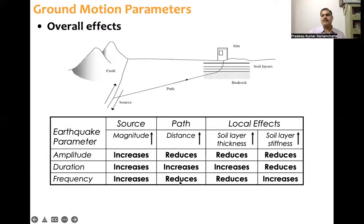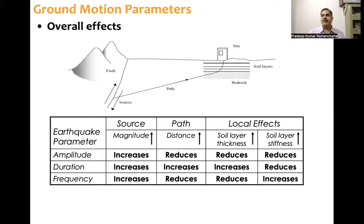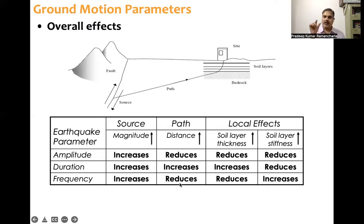And then frequency content with respect to path: it reduces. Actually this reduction will be slightly misleading. What happens is when path increases, from the source both short period waves (high frequency) and long period waves (low frequency) travel toward the site. Over long distances, high frequency waves die out because of the many cycles and damping present in the medium. So high frequency waves will die out at longer distances, and low frequency waves — that is long period waves — will remain, but their amplitude also reduces.